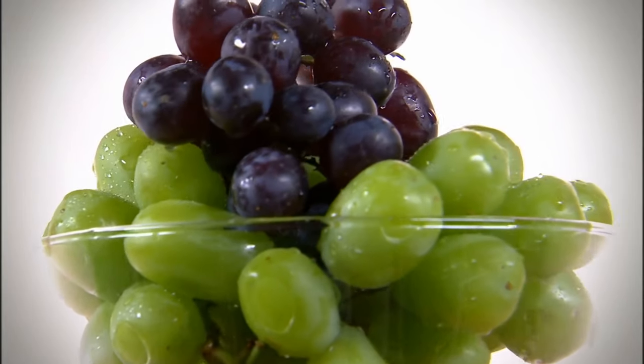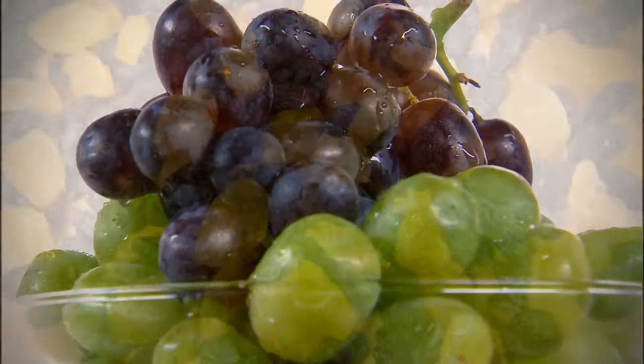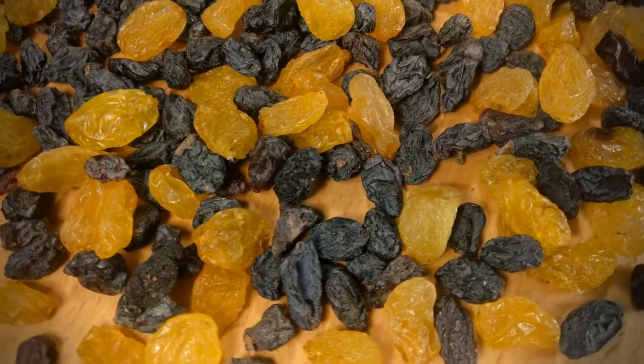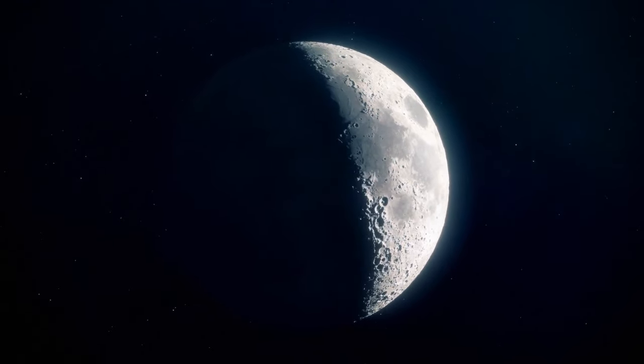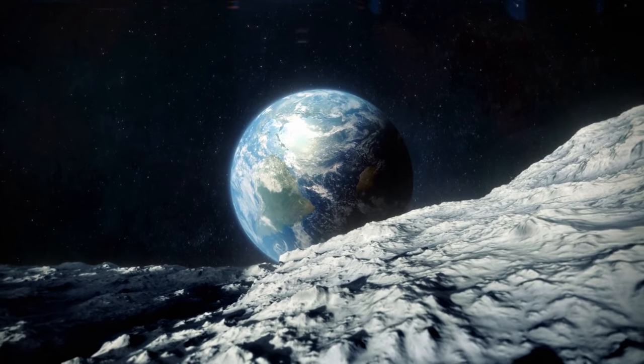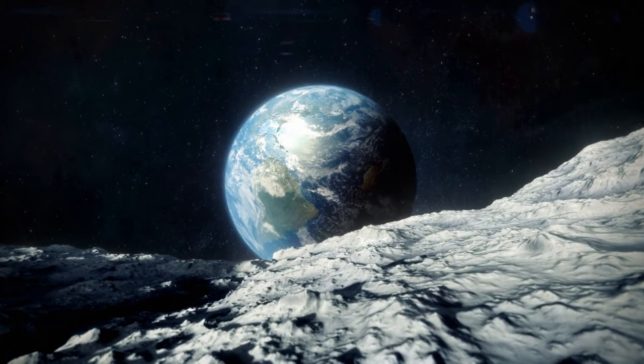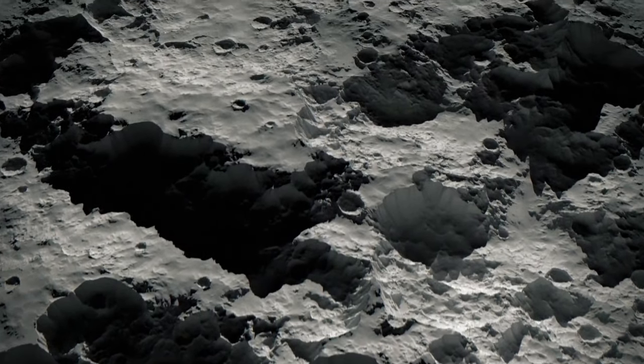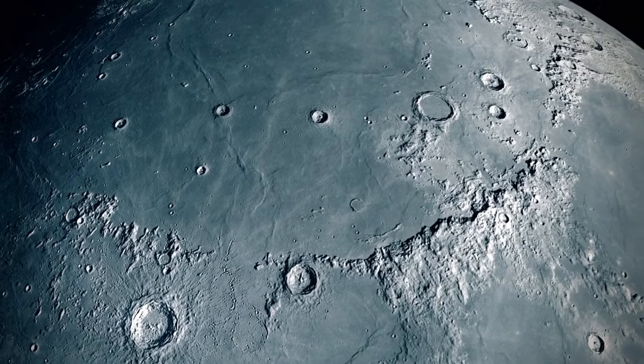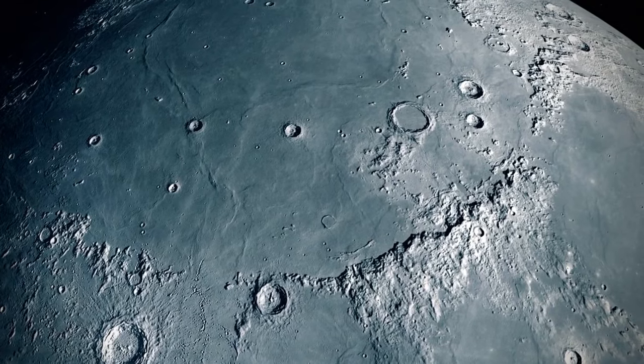To help you understand it, picture a grape turning into a raisin. It wrinkles while shrinking. The same is happening to the Moon. It's shrinking and it's wrinkling. But unlike the grape, the Moon doesn't have flexible skin. Its surface is hard and brittle. So as the Moon gets smaller, the crust cracks and breaks, and its sections get pushed over neighboring parts.